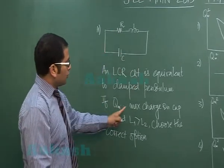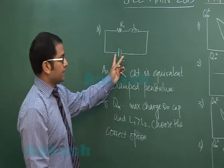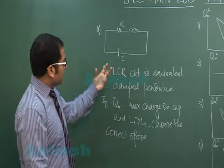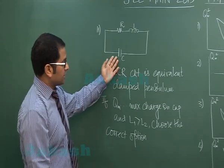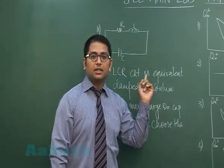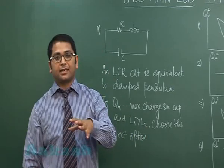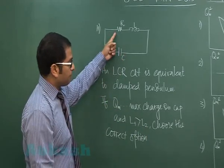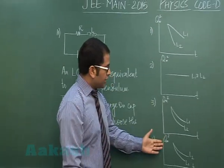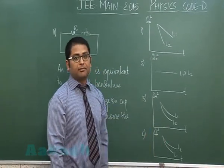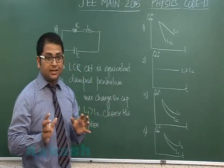If QM is the maximum charge on the capacitor, maybe initially the circuit has been triggered by giving the capacitor a charge. But over the period of time, the charge would decrease in magnitude because of resistance, and we need to choose the variation of QM square with time.